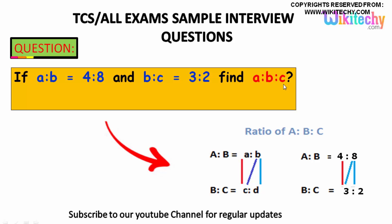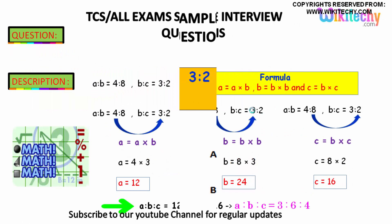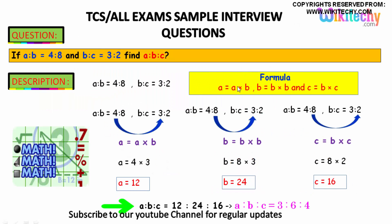For this kind of ratio, the formula is A is equal to a times b, B is equal to b times b, and C is equal to b times c. This is the formula for this kind of problem when A is to B and B is to C.